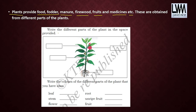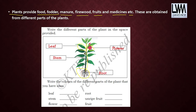Now there is a small activity in your textbook: write the different parts of the plant in the space provided. The parts are: flower, leaf, stem, and root — which is under the ground.